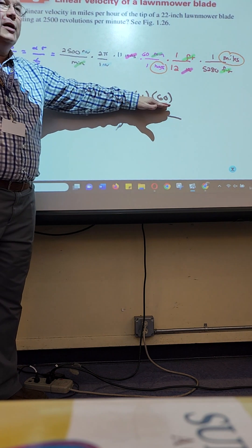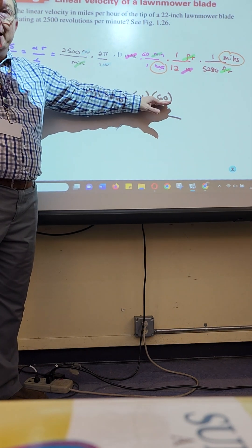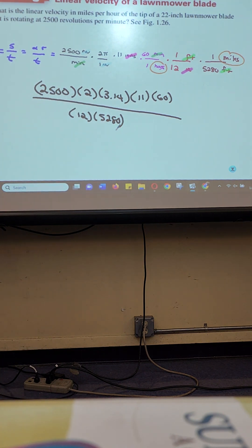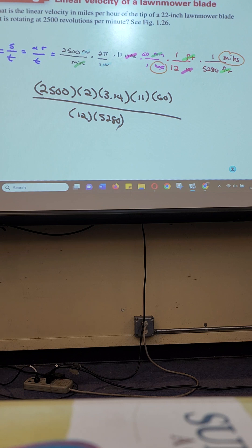In my calculator, I'm multiplying 2,500 times 2 times the pi button times 11 times 60, and dividing that by 12 times 5,280. Put all of the numerator in the calculator, hit equals, then divide by open parentheses, multiply those, close parentheses. I got 163.6.